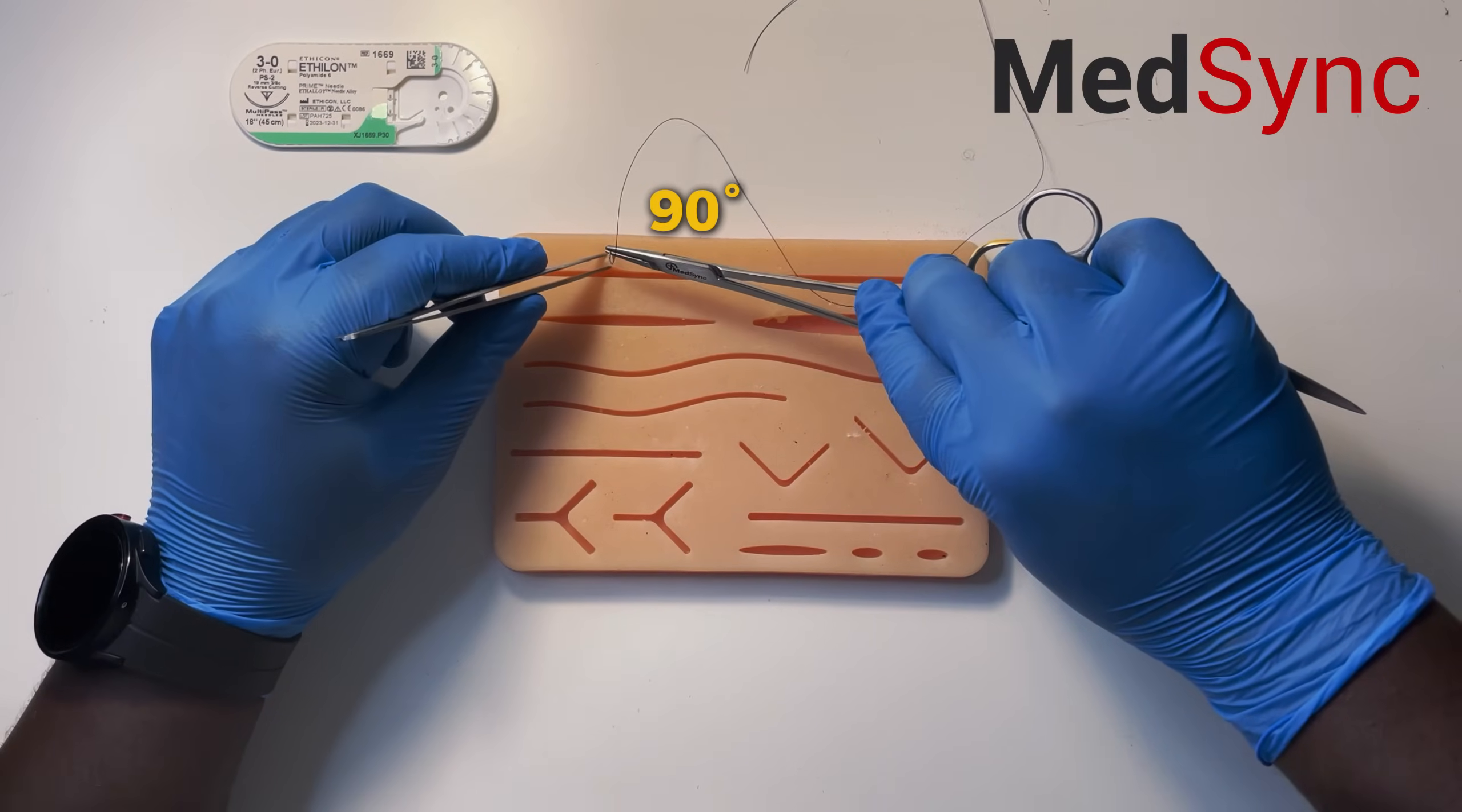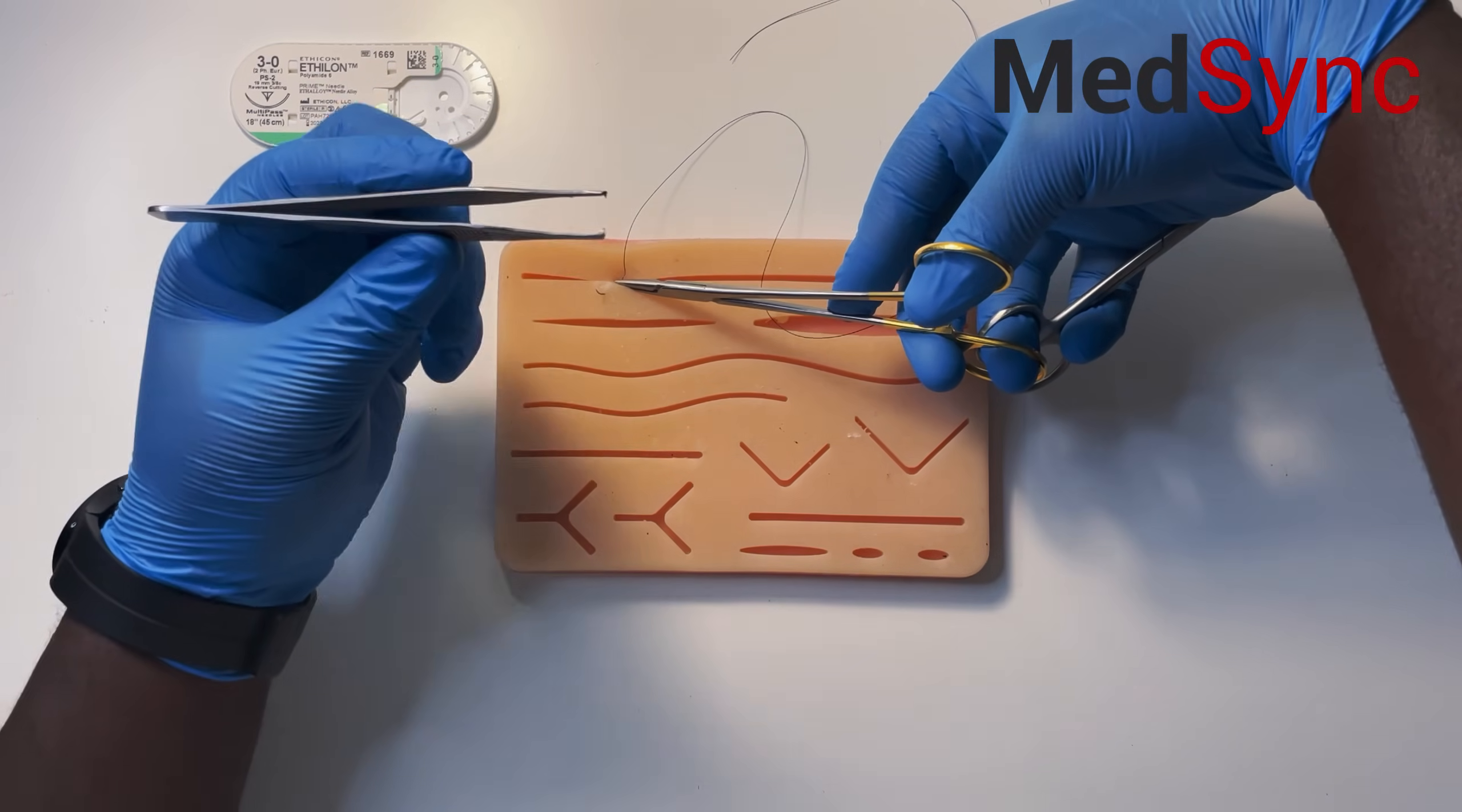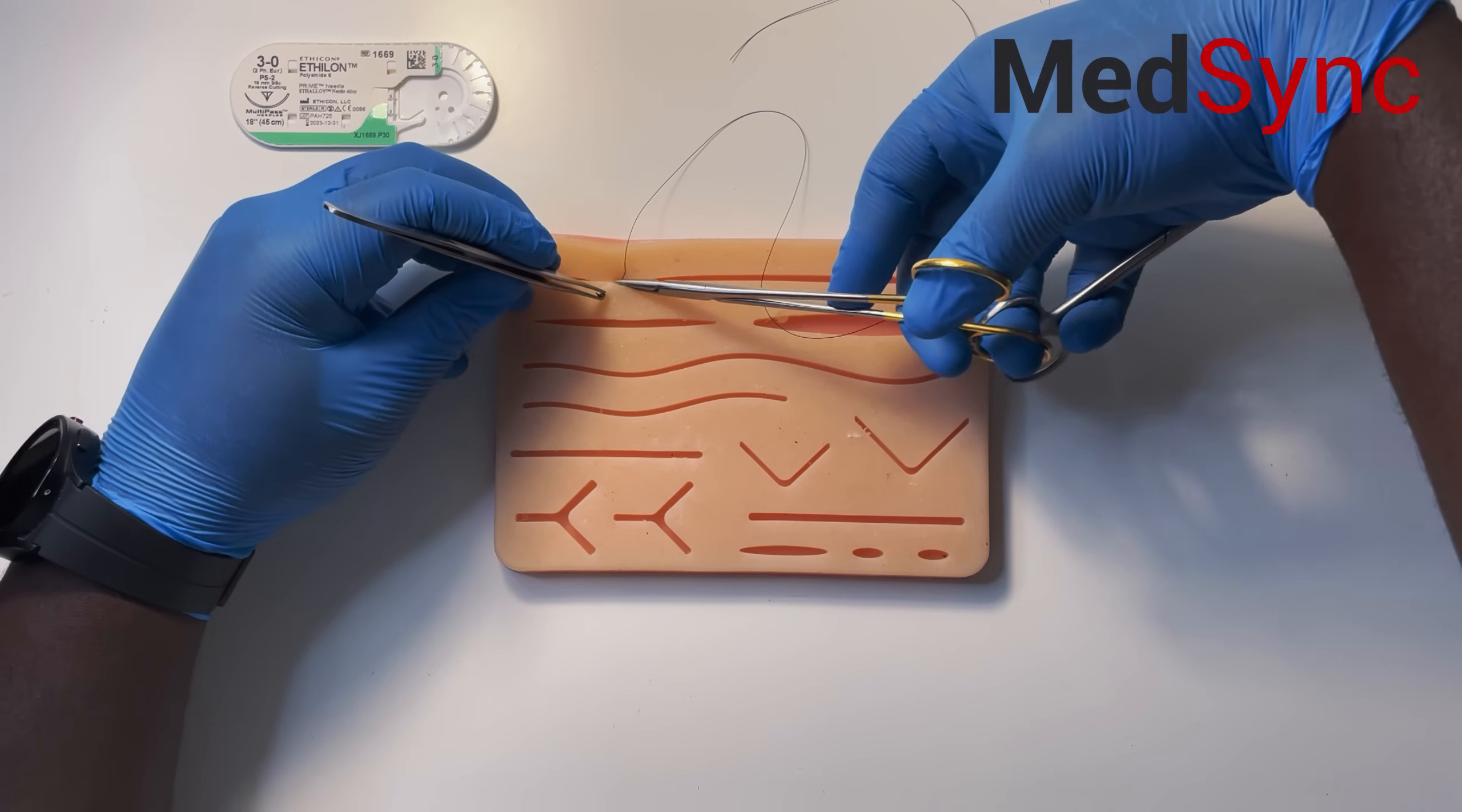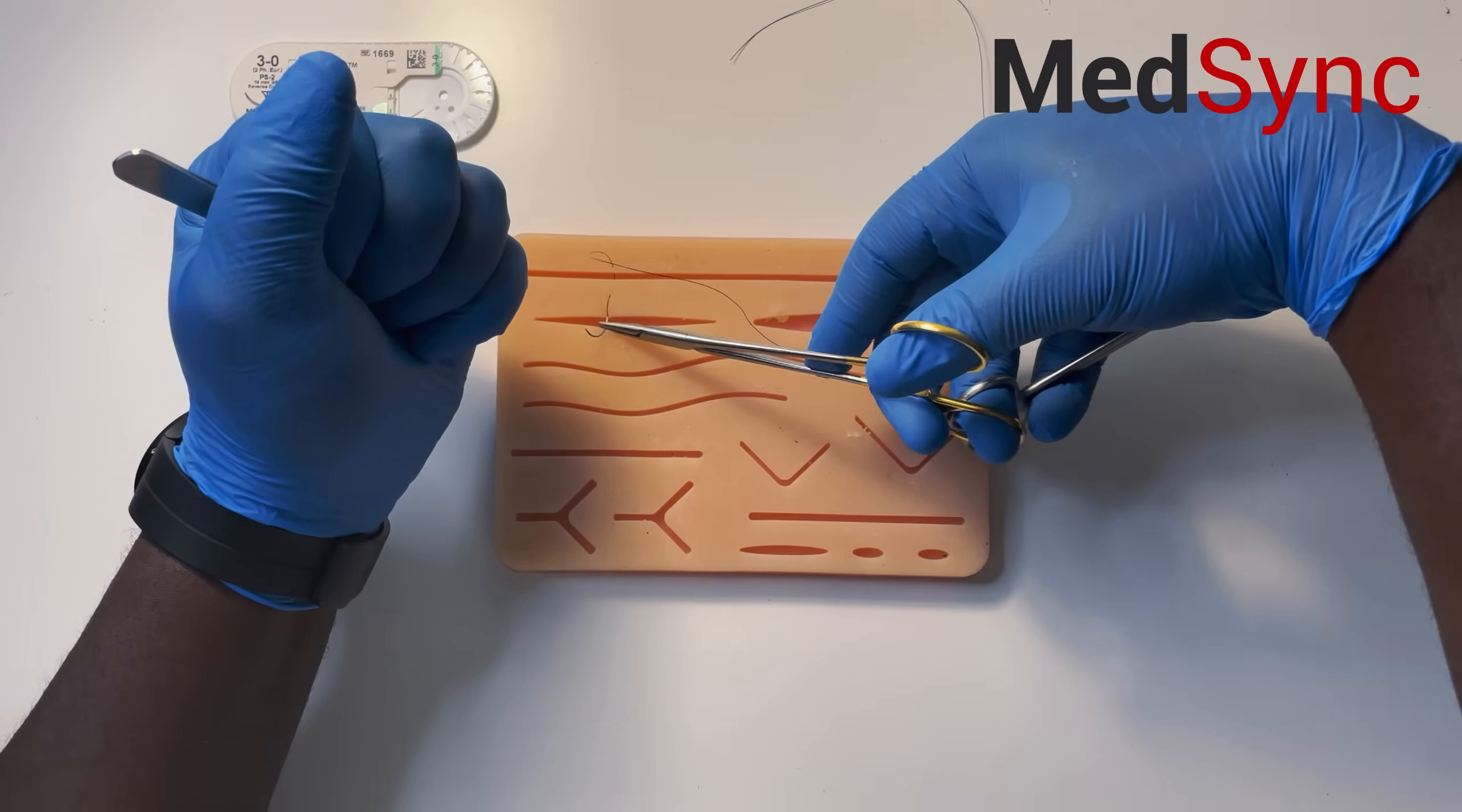You enter at 90 degrees. Rotate your wrist. Mount the needle between the teeth of the forceps. Don't grab the tip, grab the body. Mount it straight away and palm your forceps right here. Don't put them down.